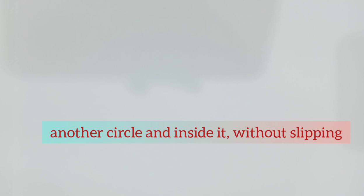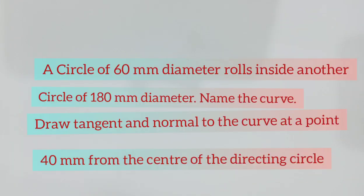Here the given problem is: a circle of 60 mm diameter rolls inside another circle of 180 mm diameter. Name the curve, draw tangent and normal to the curve, at a point 40 mm from the center of the directing circle.